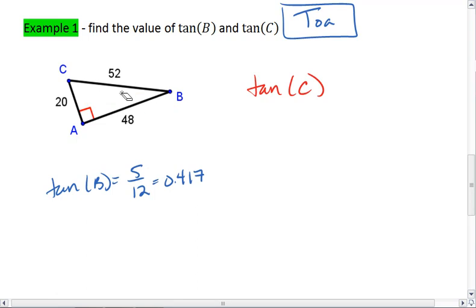If we're looking at tangent C, we're now looking at this angle up here. The opposite side is AB. The adjacent side is CA. Tangent C is going to be 48 over 20,